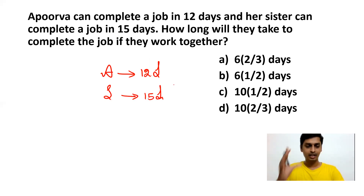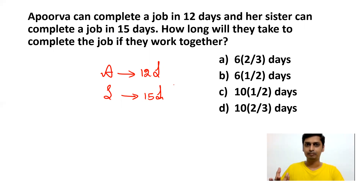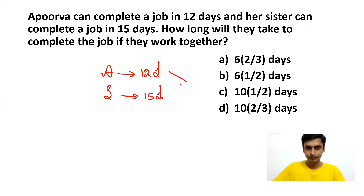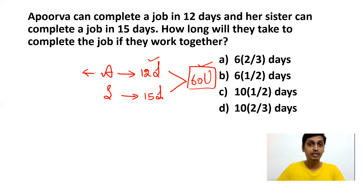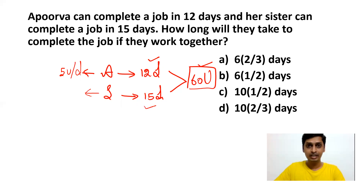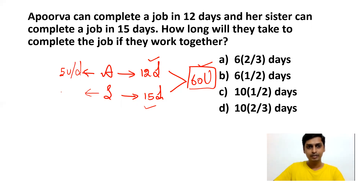We don't know the total amount of work, so we take the LCM of 12 and 15, which is 60. So 60 units is the total work to be completed. Apoorva completes 60 units in 12 days, so in one day she completes 60 ÷ 12 = 5 units per day. Her sister completes 60 units in 15 days, so in one day she completes 60 ÷ 15 = 4 units per day.